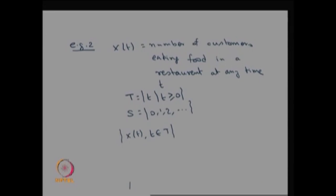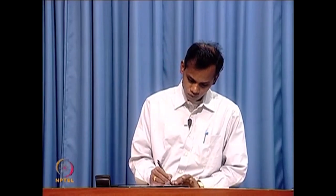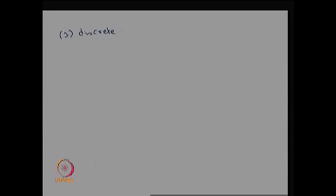This is a very typical example — S could be countably finite or countably infinite. Now let us see the third type: discrete time, continuous state stochastic process. That means the possible values of T must be countably finite or countably infinite, whereas the possible values of the state space must be uncountably many.